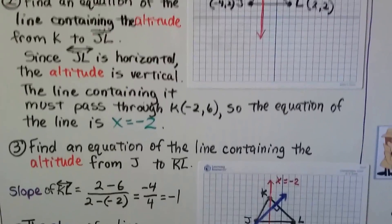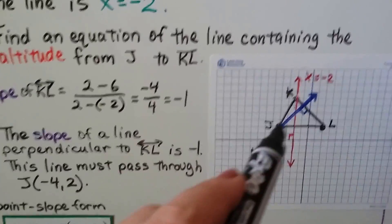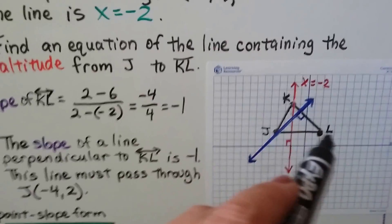And we find an equation of the line containing the altitude from J to KL. So we're going to go from J to segment KL.